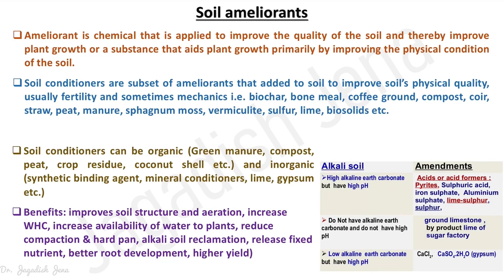In this brief lecture we will talk about soil ameliorant and soil conditioner. Ameliorant is a chemical that is applied to improve the quality of the soil. If the soil is problematic or not optimum for plant growth, then we must apply some ameliorant — a chemical that acts to solve that problematic soil and achieve an optimum condition for plant growth and development.